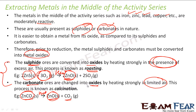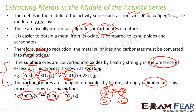So carbonate or sulfide compounds are converted into oxide using calcination or roasting. Sulfide to oxide is roasting; carbonate to oxide is calcination. One way to remember this: sulfide contains sulfur, and sulfur ends with R — so sulfide uses roasting. Carbonate and calcination both start with C — so carbonate uses calcination. So sulfur is roasting and carbonate is calcination.